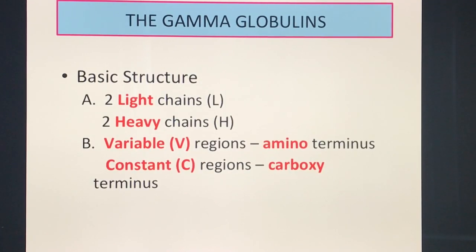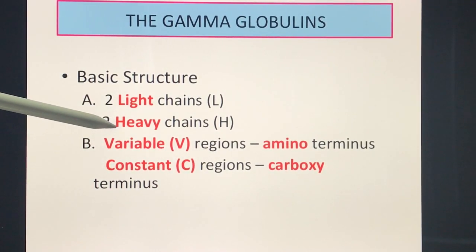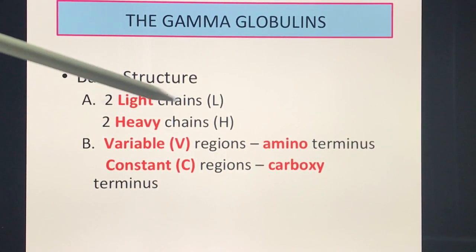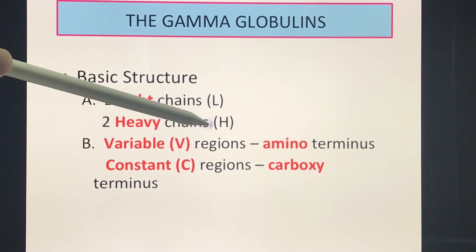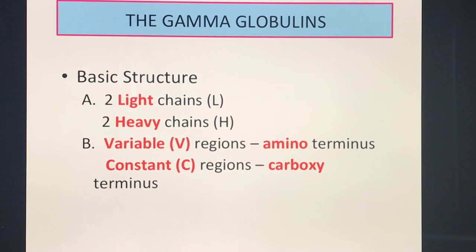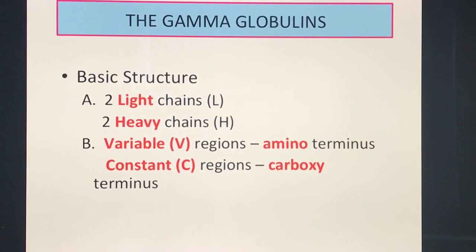From a biochemistry point of view, your gamma globulins have a basic structure. All gamma globulins have a light chain and a heavy chain — specifically two light chains (L) and two heavy chains (H). Always remember this clinical correlate: it is the heavy chain which determines the classification of the gamma globulin, whether IgG, IgA, IgM, IgE, or IgD.